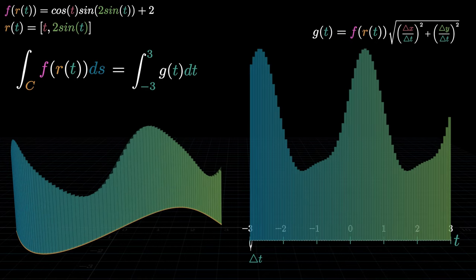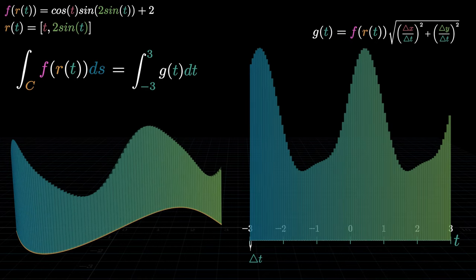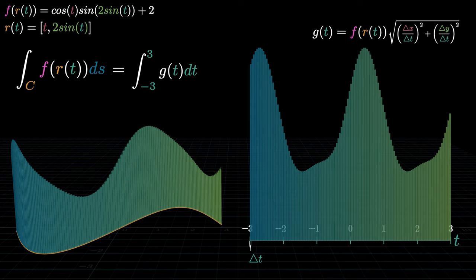Delta t now approaches 0 as a consequence. And when delta t approaches 0, the ratios delta x over delta t and delta y over delta t are nothing but their respective derivatives with respect to t.